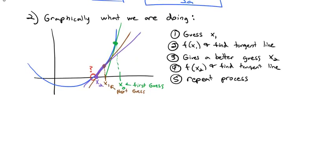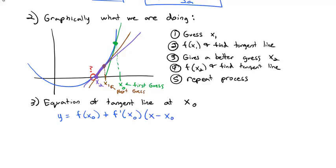So if that's graphically the process, let's look at the equation of the tangent line at x sub 0, or our starting guess. Well, we know that y equals f(x0), the y coordinate, plus the slope f prime at x0 times x minus x0 is the equation of the tangent line.